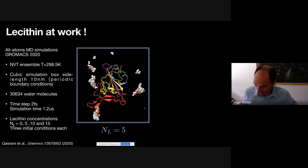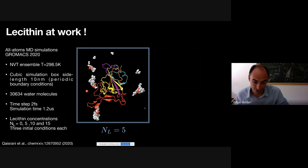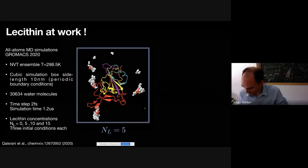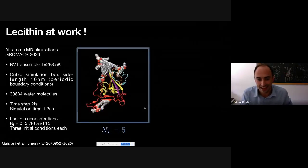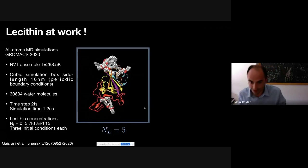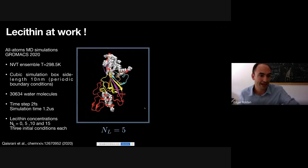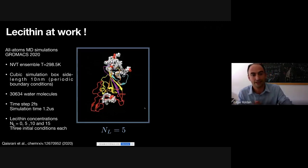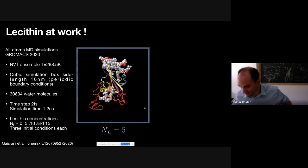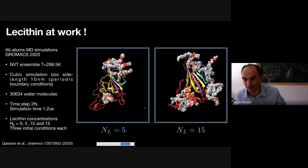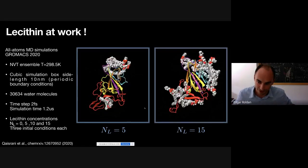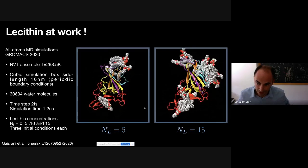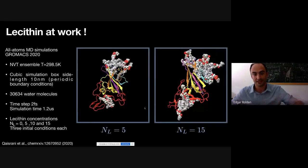What I'm going to show you is molecular dynamics simulations done mainly during the lockdown. This is the RBD in water — water molecules not shown — in the presence of lecithin molecules. You will see how lecithin attacks the RBD and binds at specific hot spots in the RBM zone and in another zone as well. We are using the NVT ensemble at room temperature in a periodic boundary conditions box, and we can repeat these simulations for a larger number of lecithin molecules.